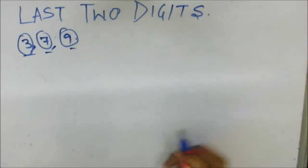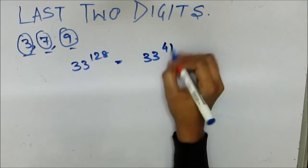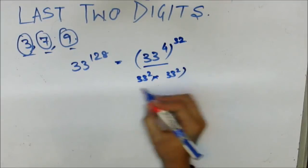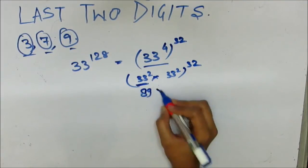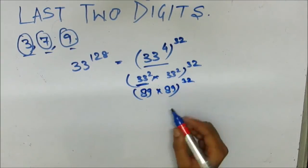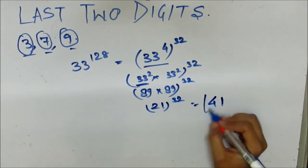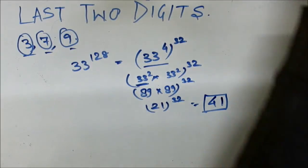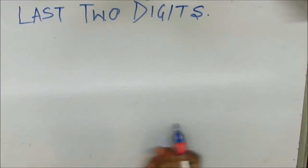So the last two digits of 33^128 are 41. Using these methods, you can easily calculate the last two digits of any odd number, instead of using conventional methods like binomial theorem. This is an extremely simple method which will take not more than 15 to 20 seconds to solve.